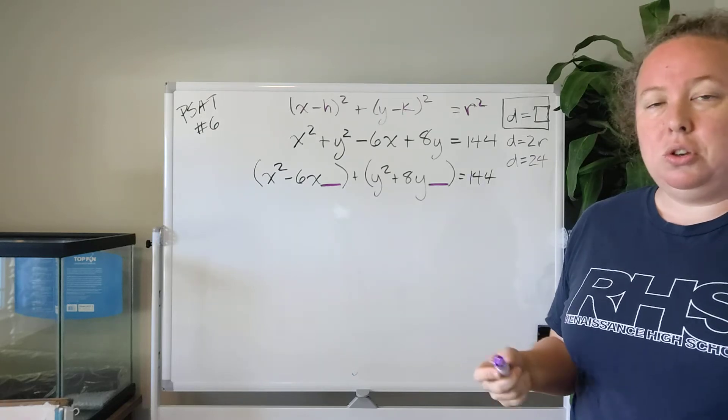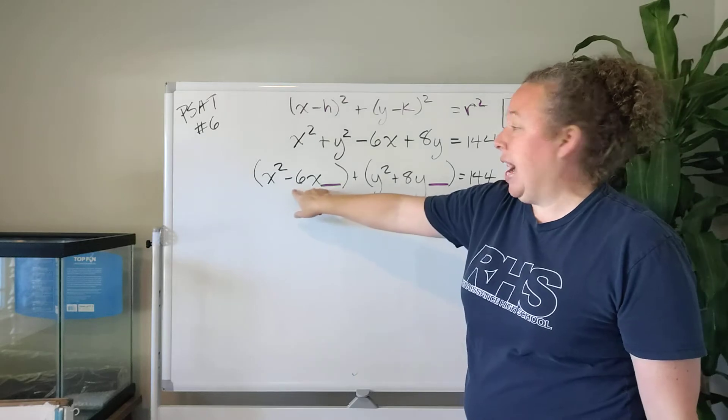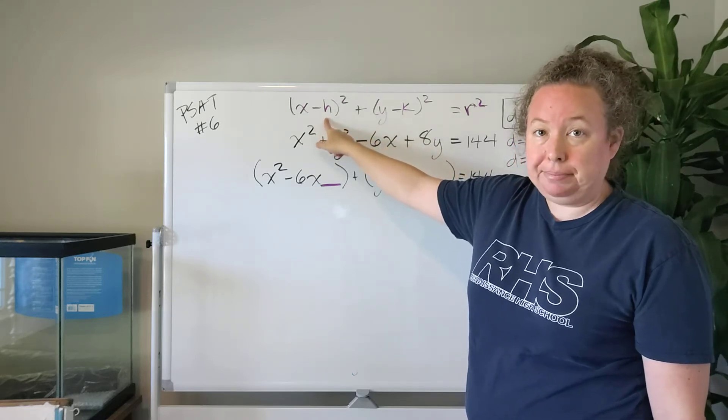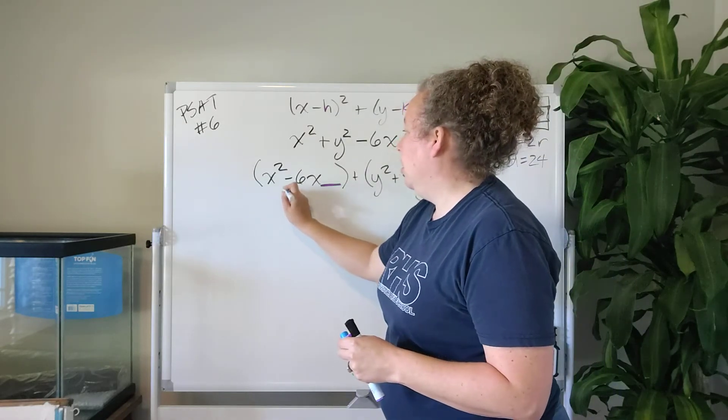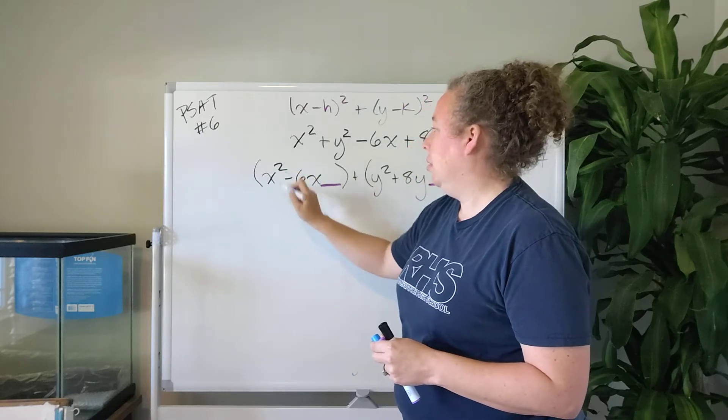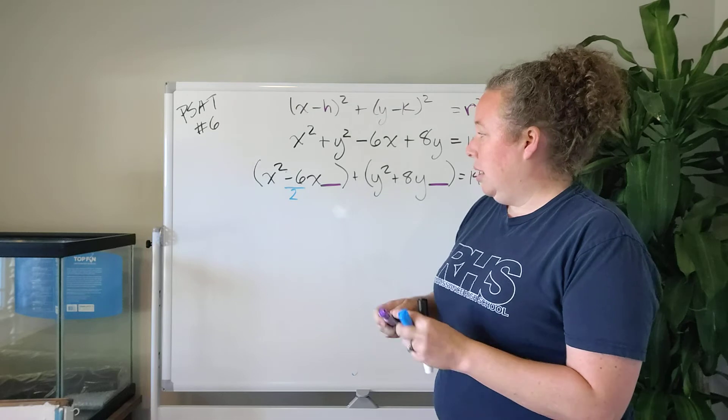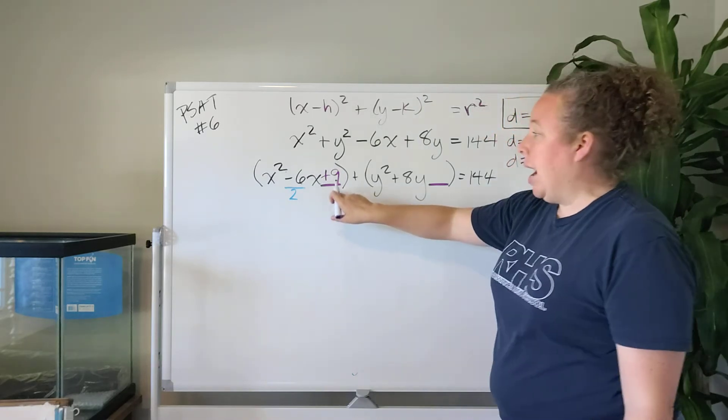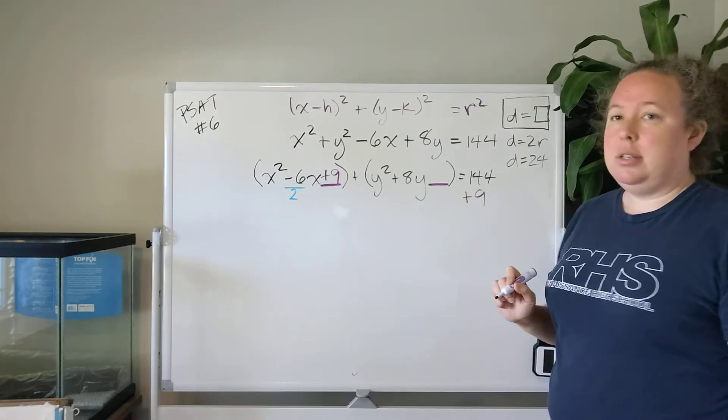That's because the method that we are going to use in this particular case is called completing the square. The reason we need to complete the square is because we're going to need to factor this or reverse foil it to match this format of x minus h squared. The way that we do that is we divide this by 2 and square it. So negative 6 divided by 2 is negative 3. Negative 3 squared is 9. We have completed the square. But if we add 9 on this side of the equation what do we have to do to keep everything in balance? We have to add 9 to this side of the equation as well.